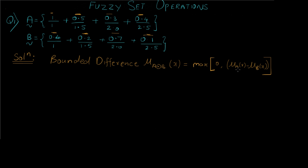The bounded difference formula says we take the subtraction between the two numerator values, compare it with 0, and take the maximum. In bounded sum we took the minimum, but here we take the maximum, and the comparison is with 0. For the first value: max(0, 1 − 0.4) = max(0, 0.6) = 0.6.